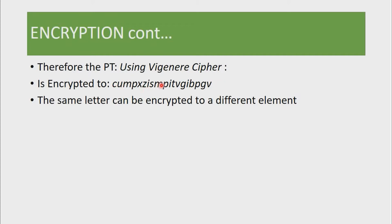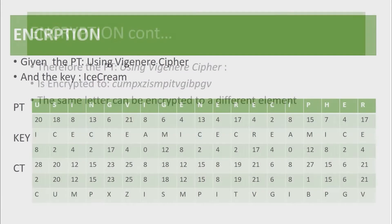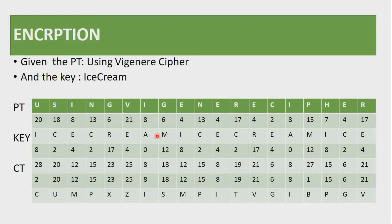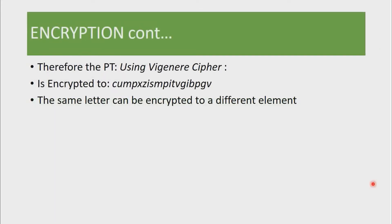As you can see, the same letter can be encrypted to a different element. If we go back to this table, this E has been encrypted to a Z, this E has been encrypted to an I, this E has been encrypted to a G, and another E has been encrypted to a V. Security is enhanced in that way because the same plain text element is being encrypted to a different cipher text element. Therefore, polyalphabetic ciphers are much more secure than monoalphabetic ciphers.